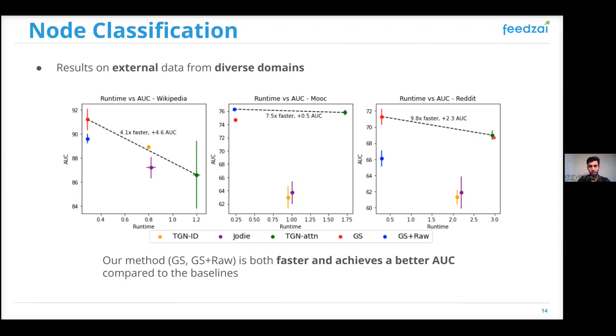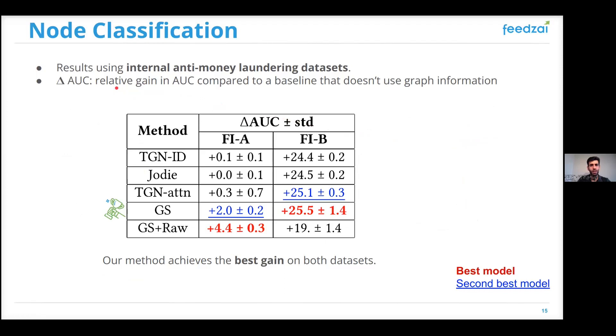Still in the node classification task, now using the anti-money laundering datasets, here due to privacy concerns, we don't show the actual identity of the financial institutions nor the actual AUC, and instead we report relative gain in AUC compared to baseline that does not use any graph information. And here we can see that the best model in the two datasets is one of our variations of Graph Sprints.